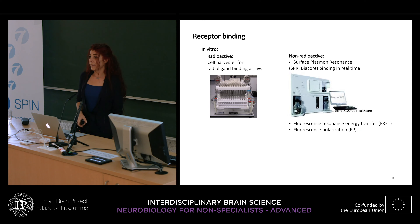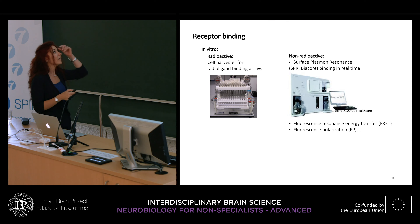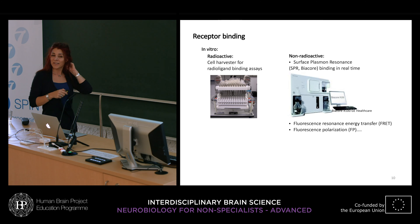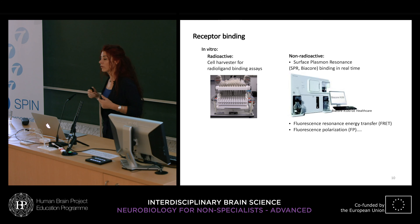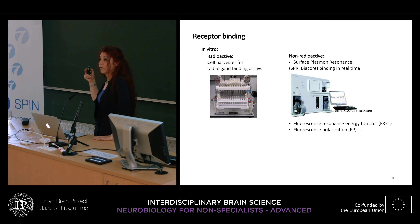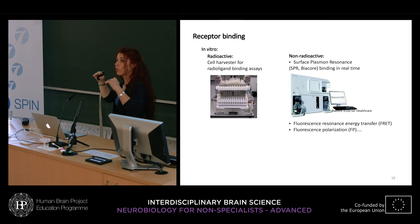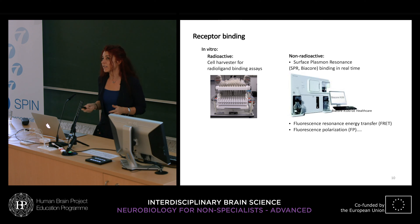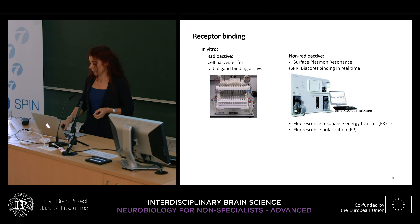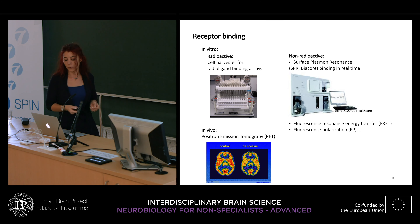How are receptor binding reactions done? Classically, radioactive assays were performed using a cell harvester — a machine for cell membrane preparations where radioactive ligand was added, then filtrated to measure radioactivity bound to the membranes. Nowadays many laboratories use non-radioactive assays like surface plasmon resonance, which gives binding of a ligand to a protein in real time by immobilizing the protein on chips and passing the ligand through. Other assay types include FRET and fluorescence polarization.